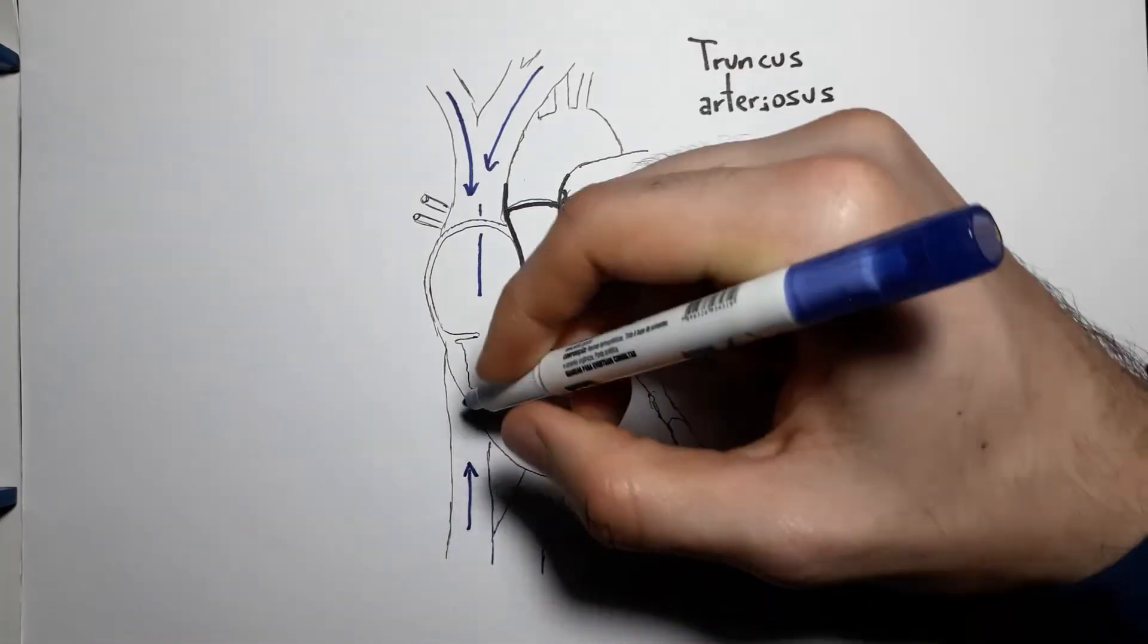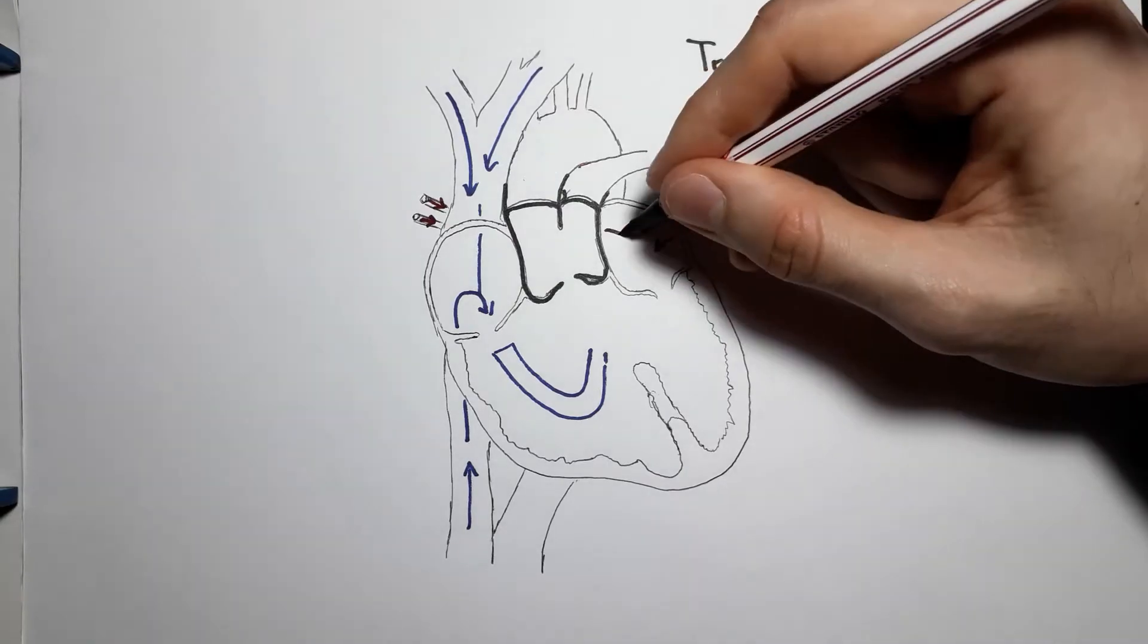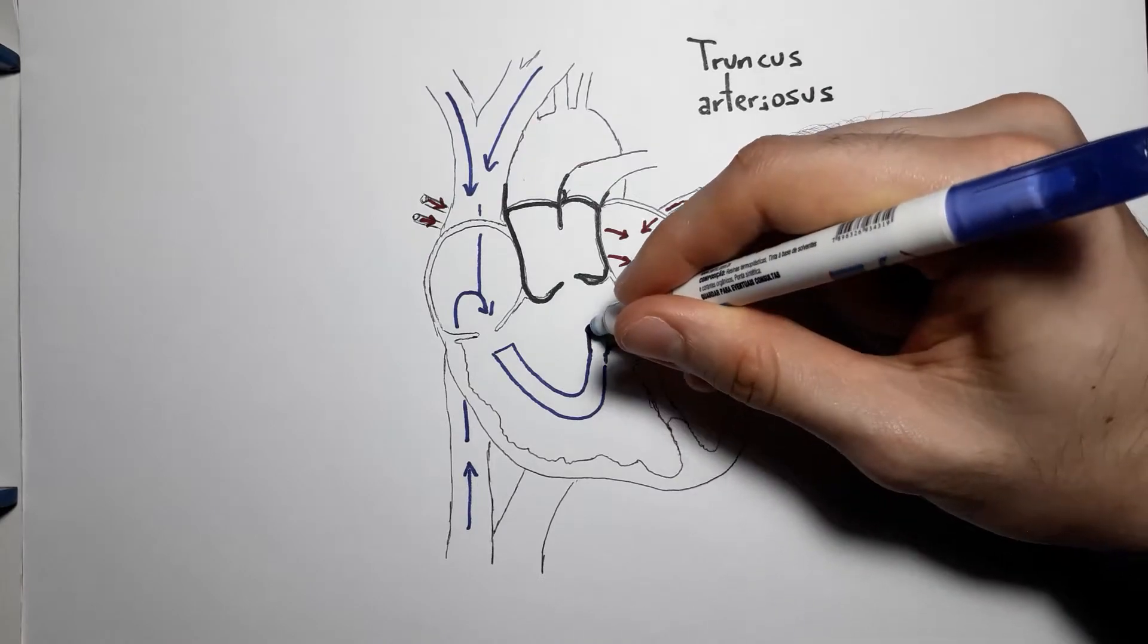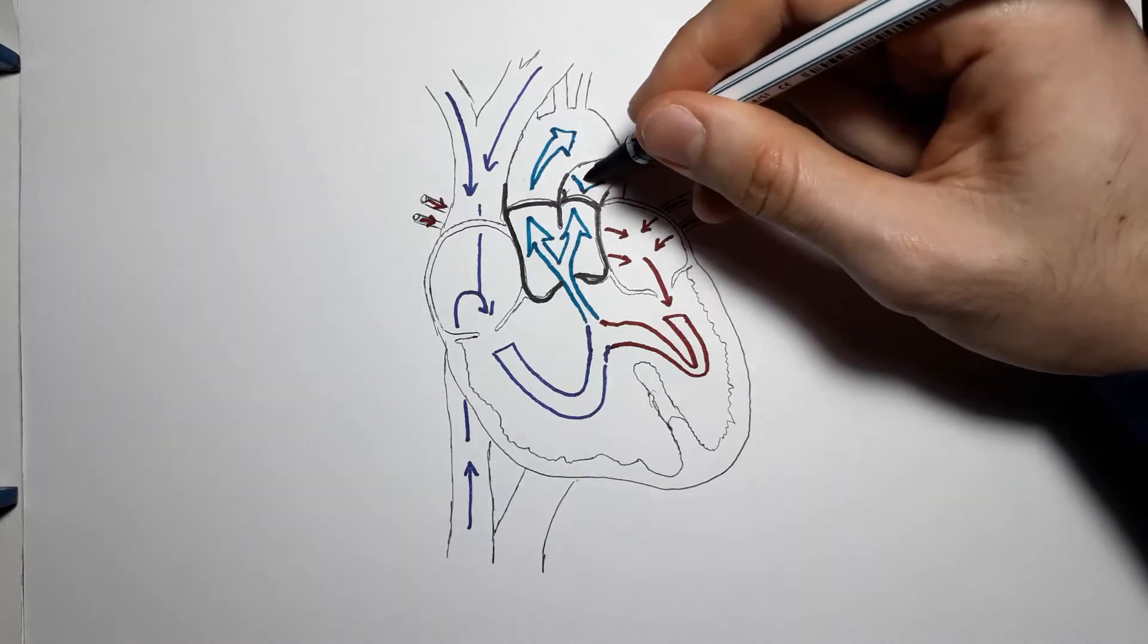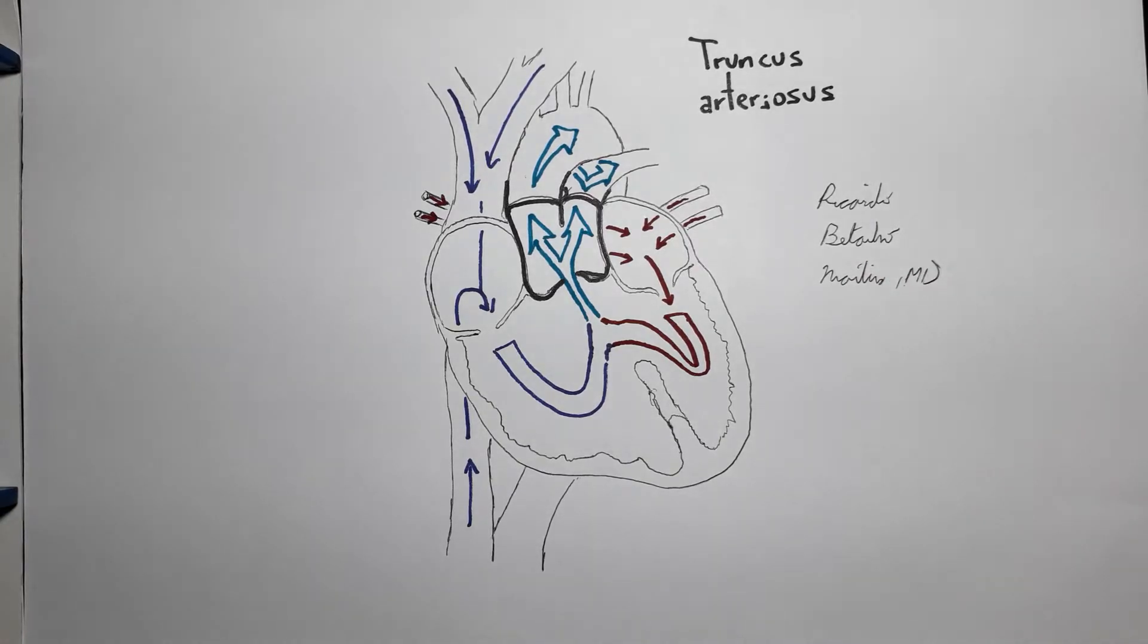This is a problem because oxygenated blood from the left ventricle and deoxygenated blood from the right ventricle have to flow through the same vessel, causing them to mix along the trajectory, which leads to partially oxygenated blood going to both the systemic and pulmonary circulations. Since the blood leaving for the systemic circulation is only partially oxygenated, the patient will present some degree of hypoxemia, which is likely to present as cyanosis.